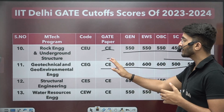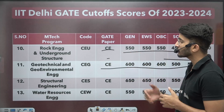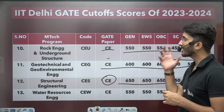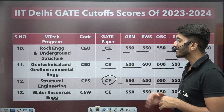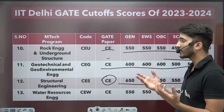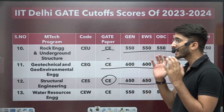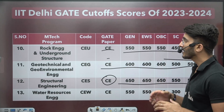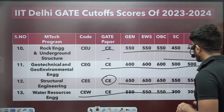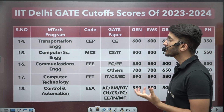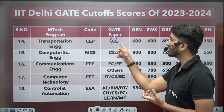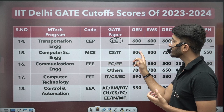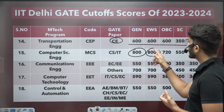Geotechnical and Geo-Environmental Engineering is one of the most popular courses among civil engineering students, and Structural Engineering is also a popular course. The cutoff marks required for selection in IIT Delhi are already mentioned so you can check which marks you need to secure in GATE. For Water Resource Engineering and Transportation Engineering, also a most popular civil engineering course, cutoff marks are available.